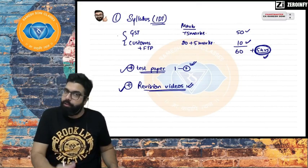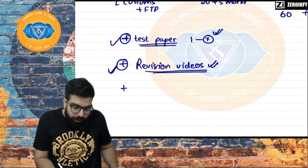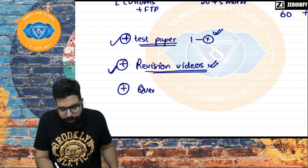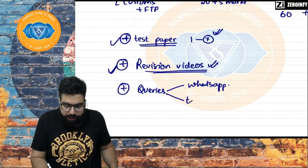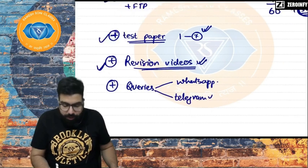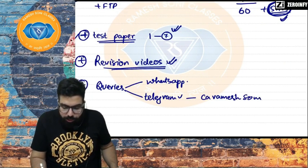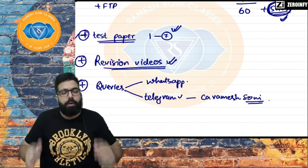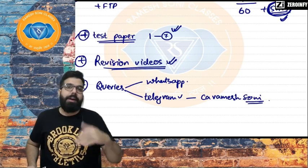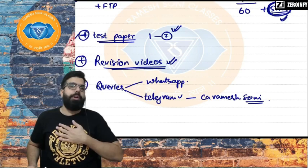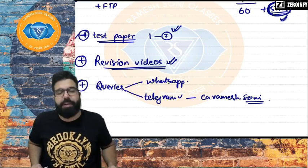For queries, you can text me on WhatsApp or message me on Telegram. We also have a Telegram group called 'CA Ramesh Soni' with around three to four thousand students where you can post your doubt and other students will reply. If you don't get a reply, drop it to me directly and I will get back to you.